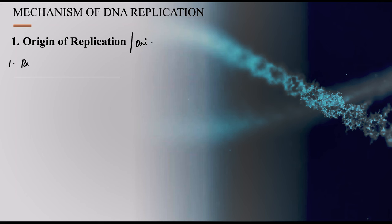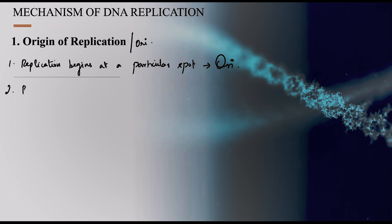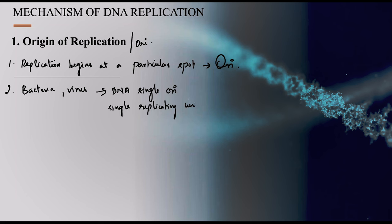Replication begins at a particular spot called ORI. In bacterial and viral DNA, there is a single ORI region, which is called a single replicating unit or replicon. In eukaryotic DNA, there are multiple ORI regions, meaning several replicating units are present.